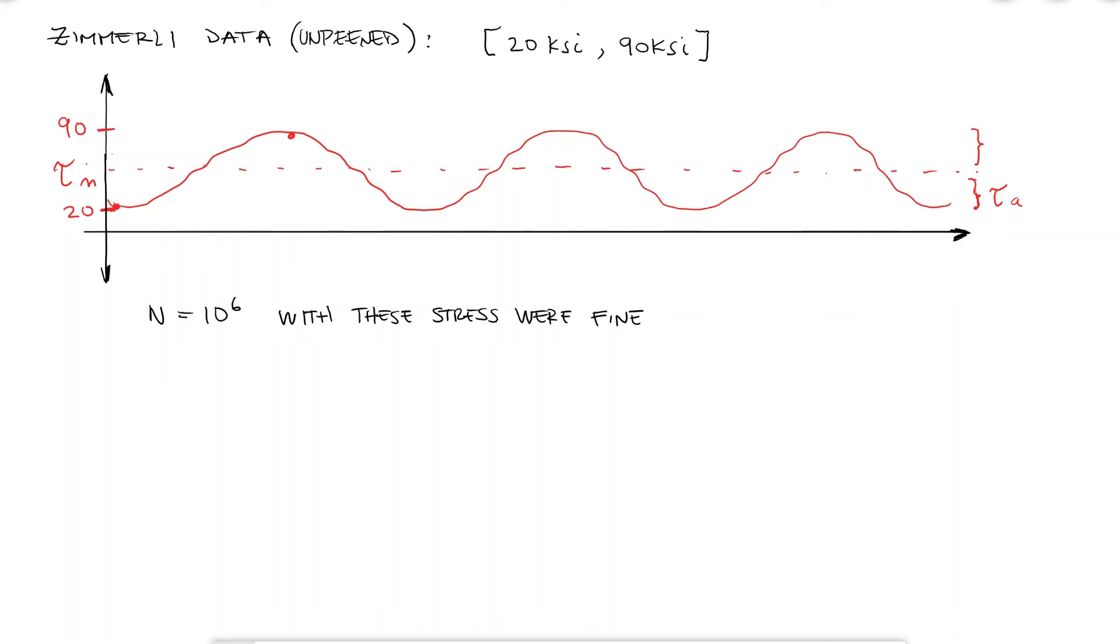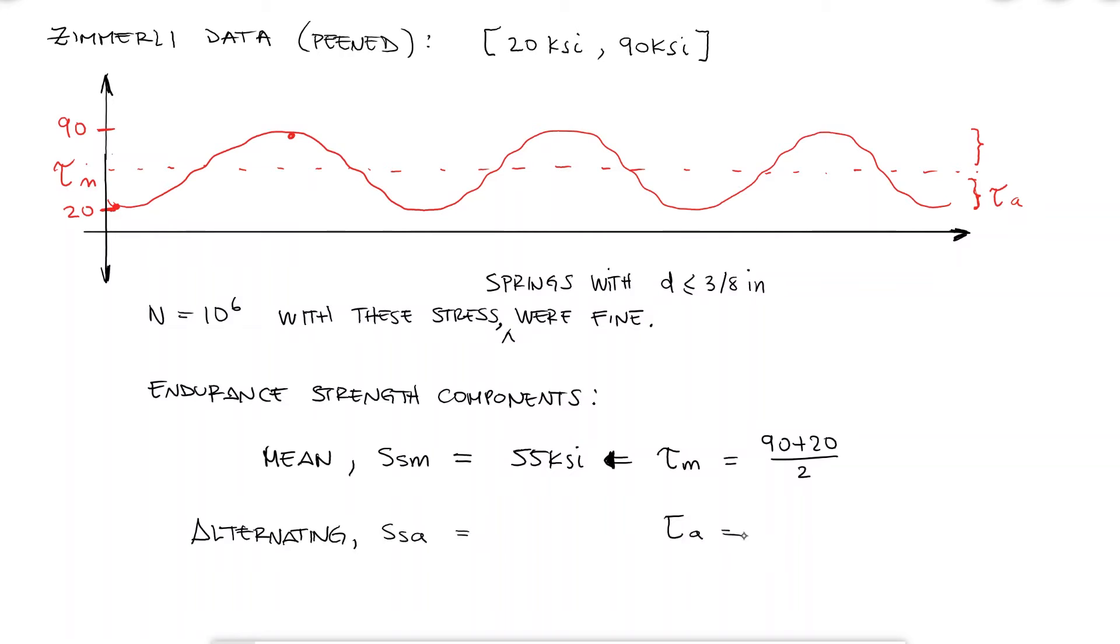And just like I mentioned earlier, this was true for any steel spring with a diameter under 3/8 of an inch. This range translates into a mean shearing stress called the mean endurance strength component of 55 ksi, and into the alternating shearing stress called the alternating endurance strength component of 35 ksi.